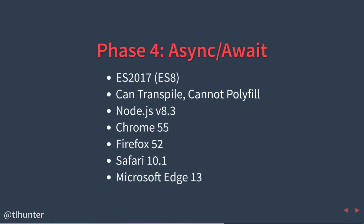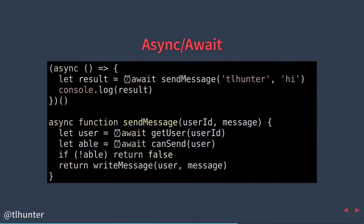Phase four: async functions, which use the async keyword and the await keyword. This is a new syntax introduced in ES2017. You can't polyfill it, but you can transpile it. One thing you'll immediately notice is that immediately invoked function expression (IIFE) wrapping — when you wrap a function in parentheses and follow with parentheses to immediately execute it. If you want to use await, it needs to be within an async function. If you were to use await at the top level, you'd get a syntax error. So for REPL code, you need to wrap it in this async call. But as far as an actual application goes, it's not a big deal.